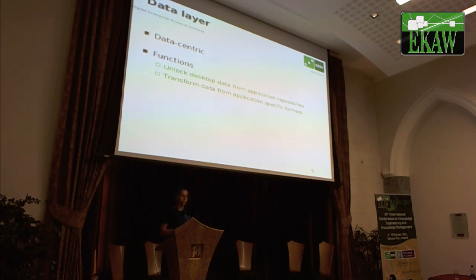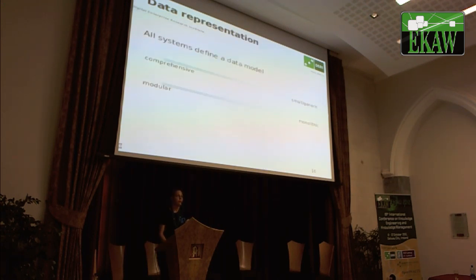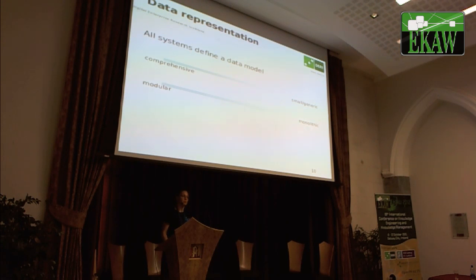The systems are based on the data that users have on their desktop. The data layer contains all the semantic data, and its main function is to create a network of linked personal information on the desktop — from application repositories and from specific formats. All the systems I surveyed have a data model. Some are more comprehensive, trying to define everything in the personal information management world. Some are smaller, defining just the bare necessities for the user to be able to use the system.